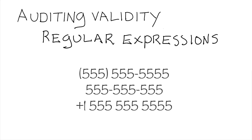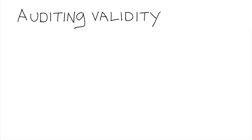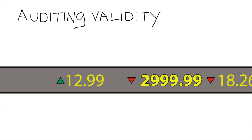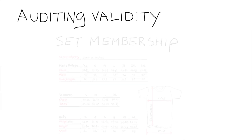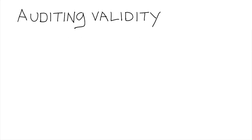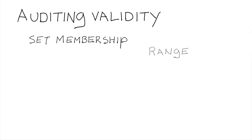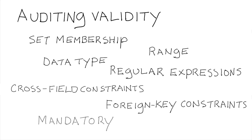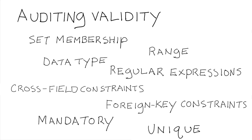We might also have fields that we expect to have a particular pattern — a pattern that we can test using regular expressions. Some fields will have values that we expect to be in a certain range. This might be a numeric range that we can do bounds checking for, or we might be talking about set membership of some kind. So all t-shirts have to have a size field that's small, medium, large, or extra large. Auditing validity is about determining what the constraints are on individual fields, and checking to ensure the field values adhere to those constraints.